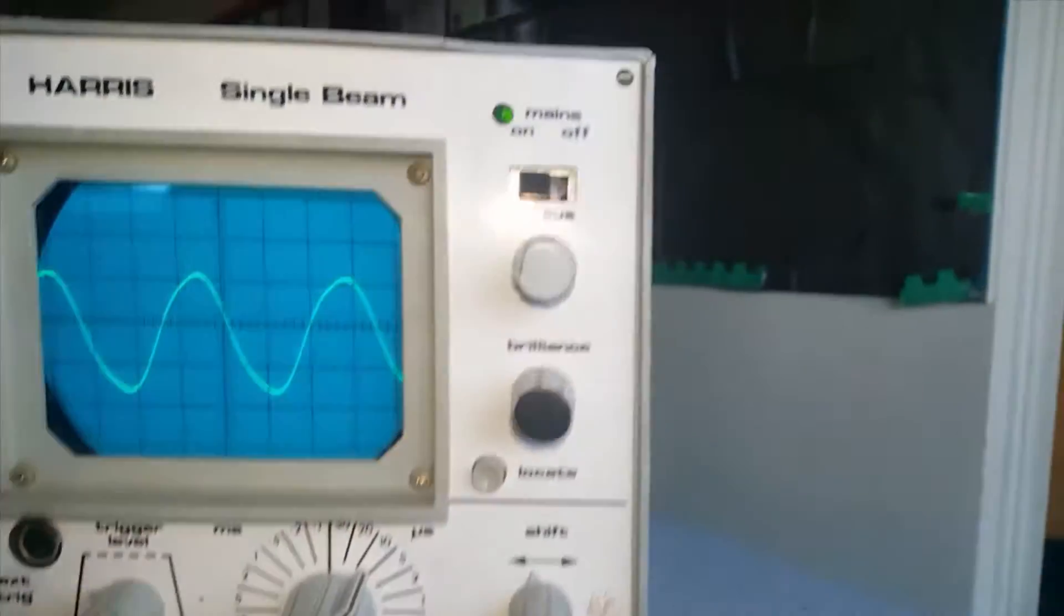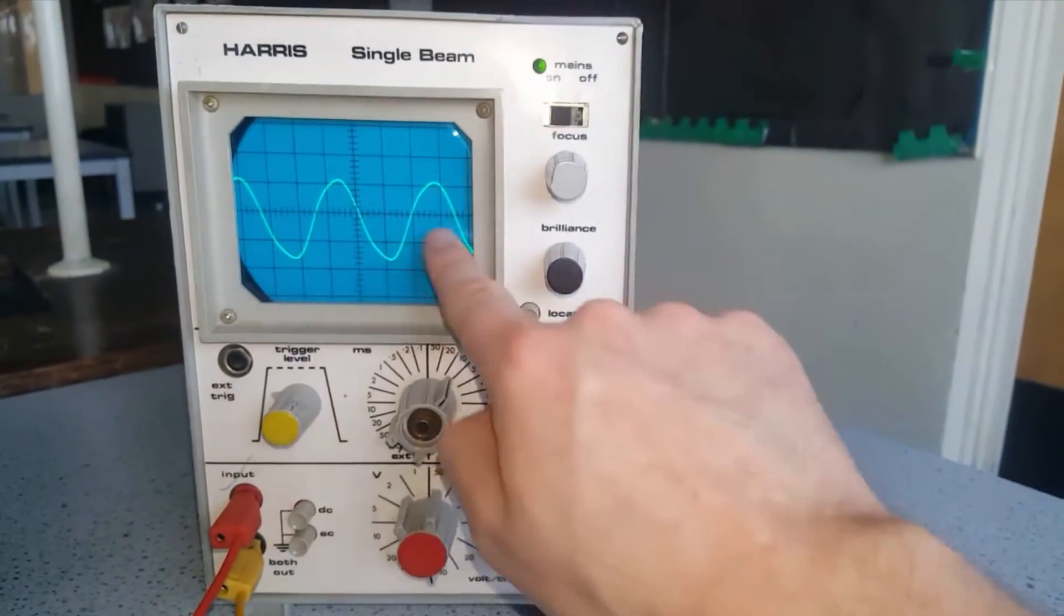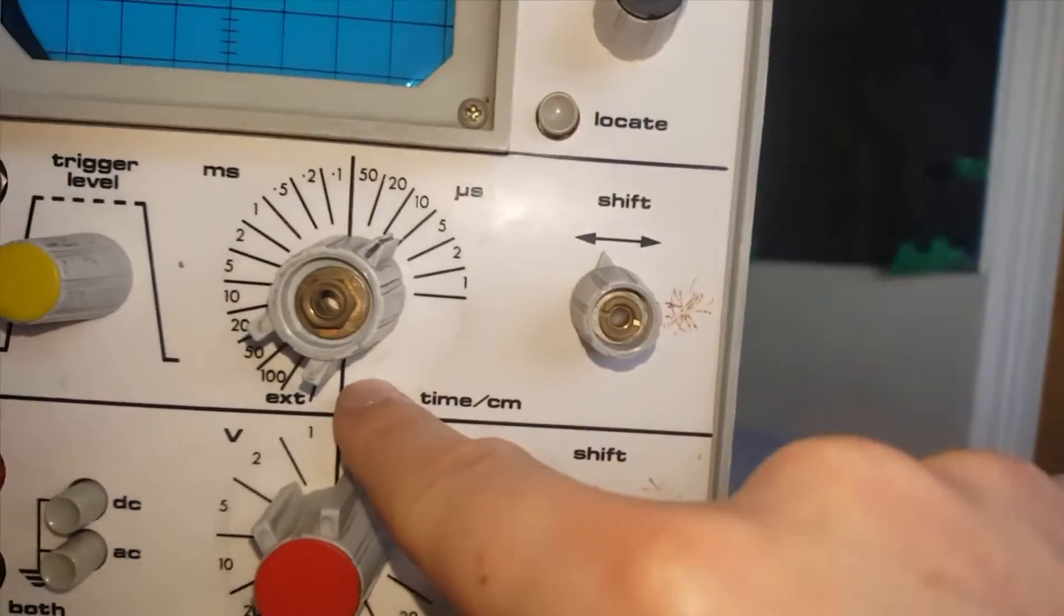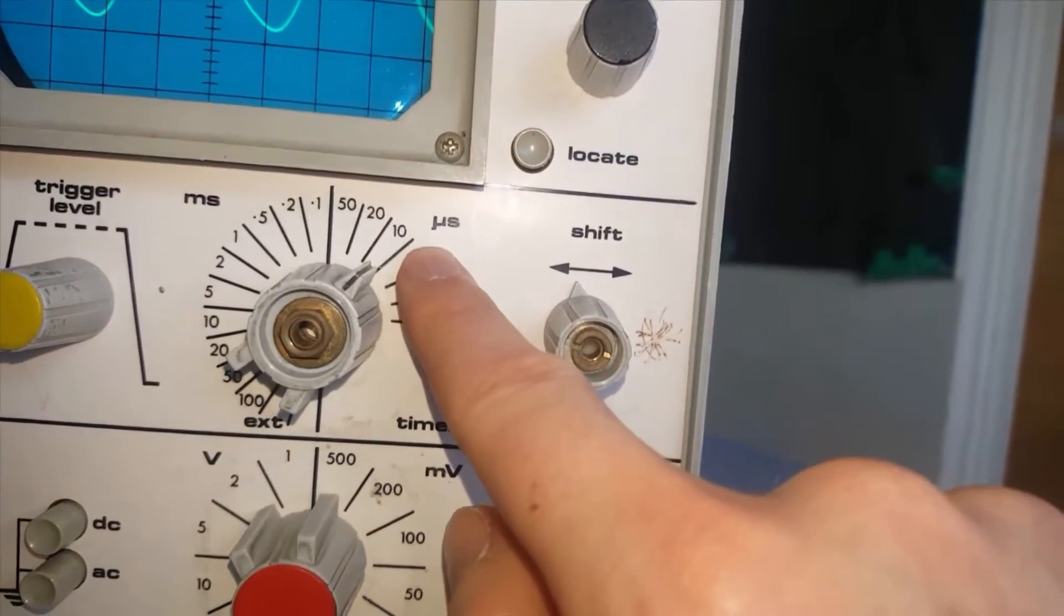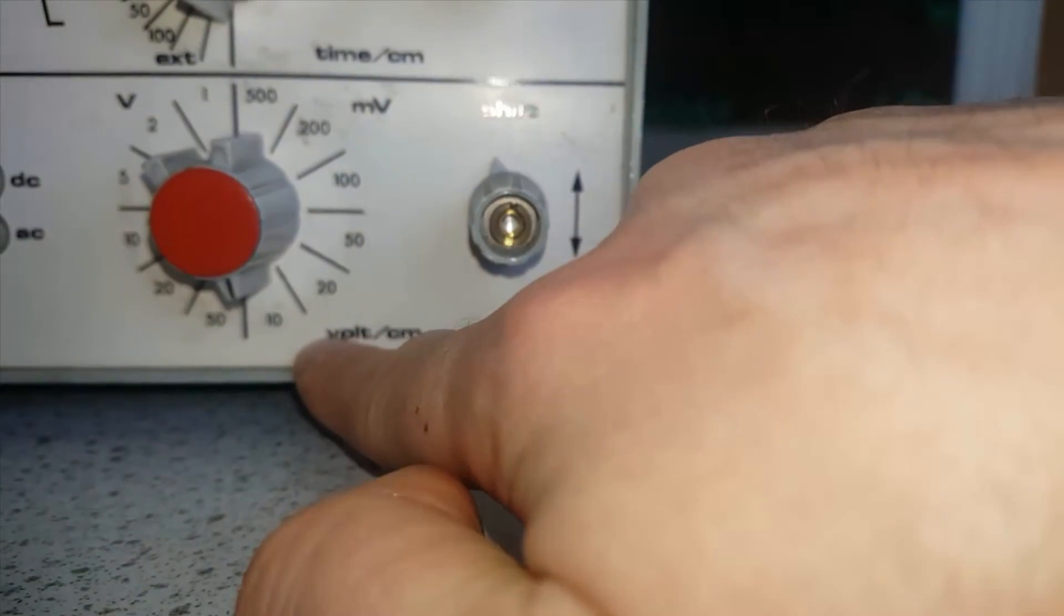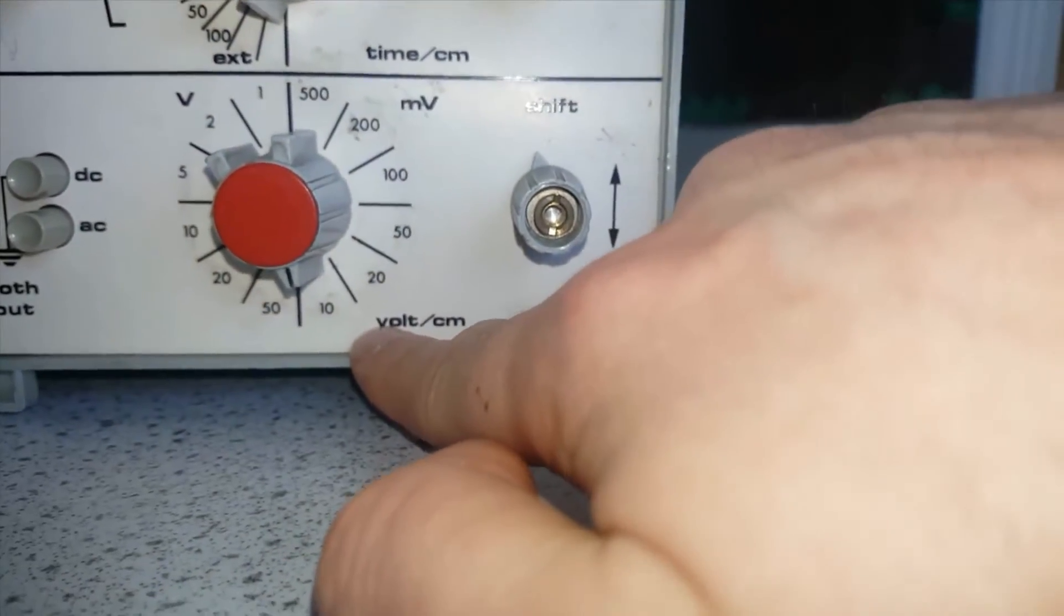So now we know that our wave that's on the screen here, each centimetre going across on the x-axis represents 10 microseconds of time and each centimetre going up represents 10 millivolts.